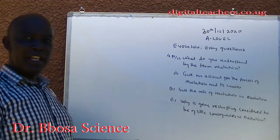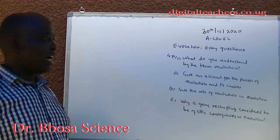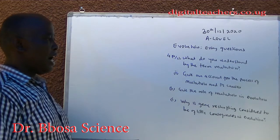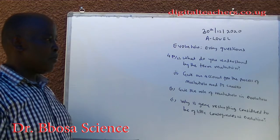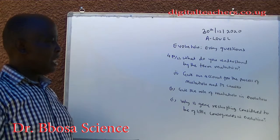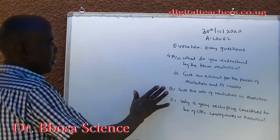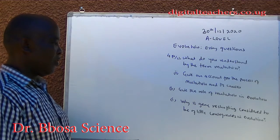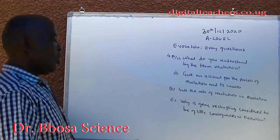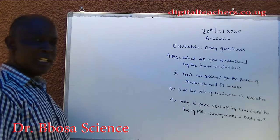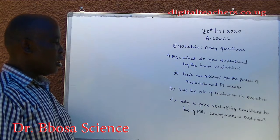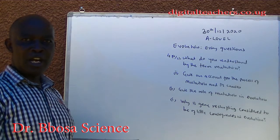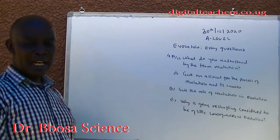Number 4. A. What do you understand by the term mutation? B. Give an account of the process of mutation and its causes. C. Give the role of mutation in evolution. D. Why is gene recycling considered to be of little consequence in evolution? You can pause and answer.